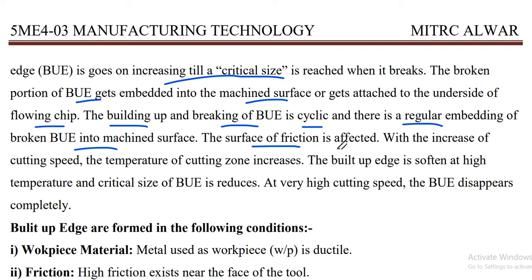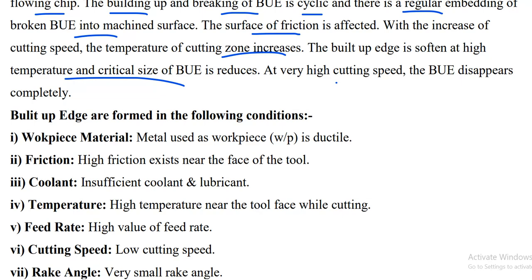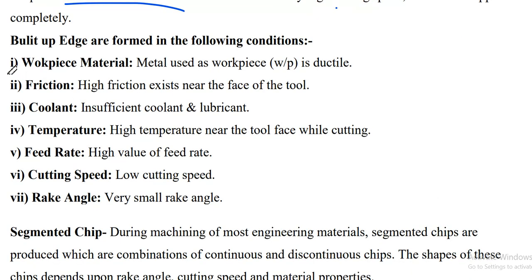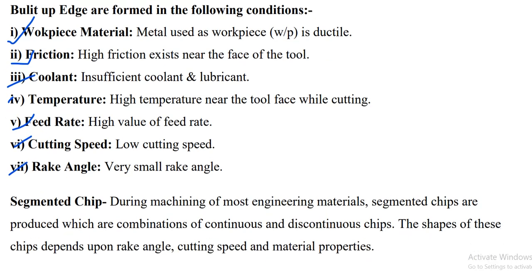The surface finish is affected by this process. With increase of cutting speed, the temperature of the cutting zone also increases, so the built-up edge is softened at high temperature and the critical size of the BUE is reduced. At very high cutting speed, the BUE will disappear completely. Conditions for built-up edge formation include: ductile workpiece material, high friction near the tool face, insufficient coolant and lubricants, high temperature near the tool face during cutting, high feed rate, low cutting speed, and low rake angle.